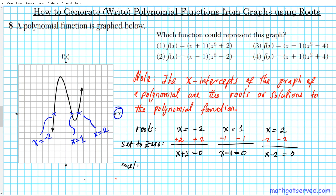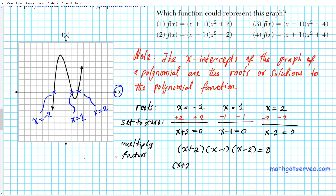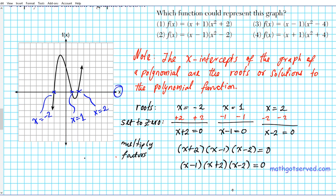The next step is to multiply the resulting expressions on the left side — these are the factors. This is the reversal of the zero product property. Notice that x + 2 and x - 2 have something special. Looking at the answer options, the component with x - 1 comes first, so let's write x - 1 times x + 2 times x - 2.